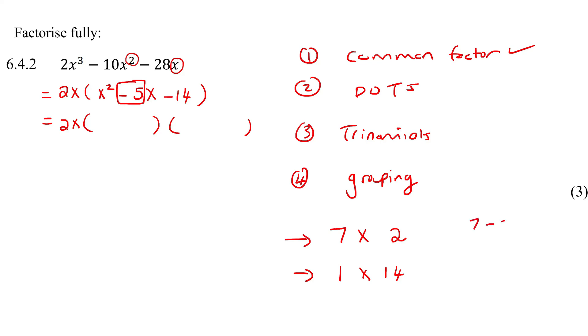How can you make a minus five? You could think about seven minus two, but that gives you positive five. You could say seven plus two, that gives you nine. You could say two minus seven, that gives you minus five. That's what we wanted. So we want the two to be a positive, and the seven to be a negative.